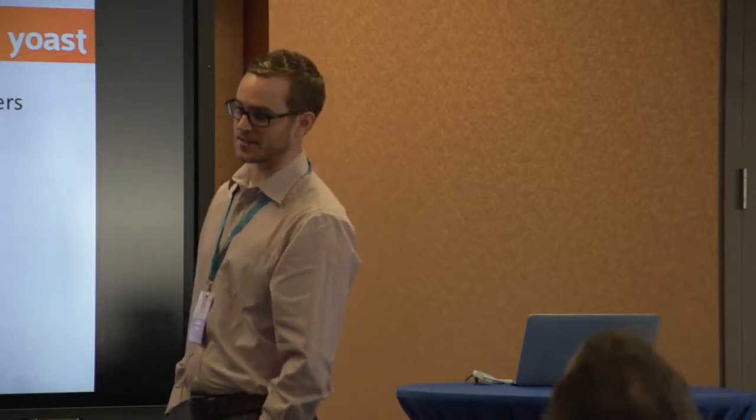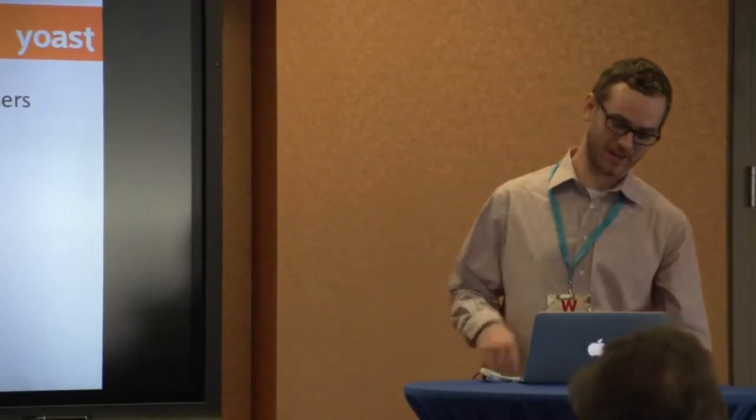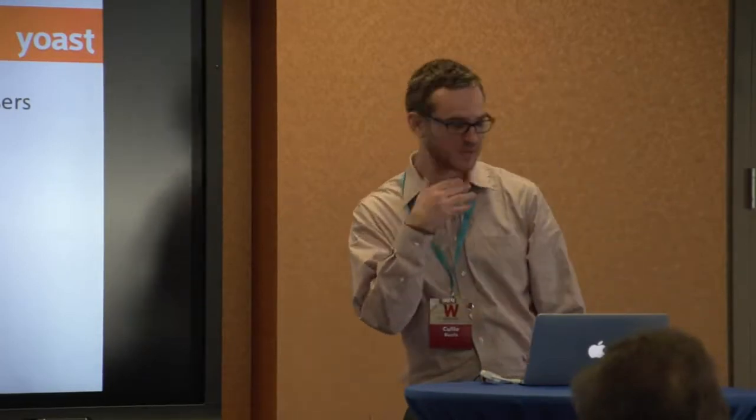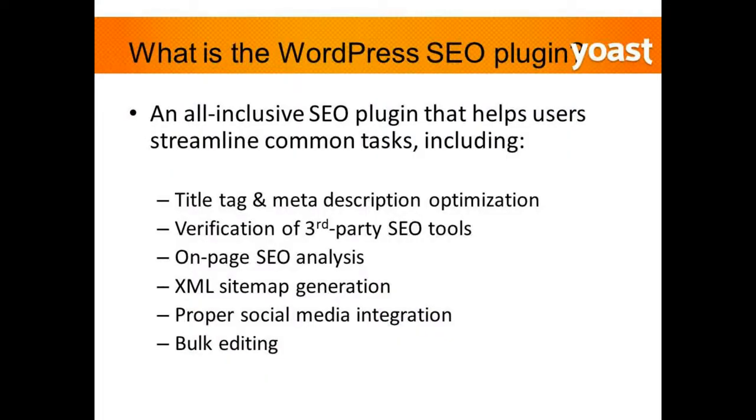The mistake I made is I didn't really give her basic SEO guidelines — I just said here's the plugin, it's pretty self-explanatory, dive into it. Big mistake. About two weeks later she calls me and says she got everything set up on Yoast. I log in and the first thing I noticed is in her title tag she had 'rank number one for cooking recipes.' The WordPress SEO plugin covers title tag and meta description optimization, verification of third-party tools, and on-page SEO analysis.